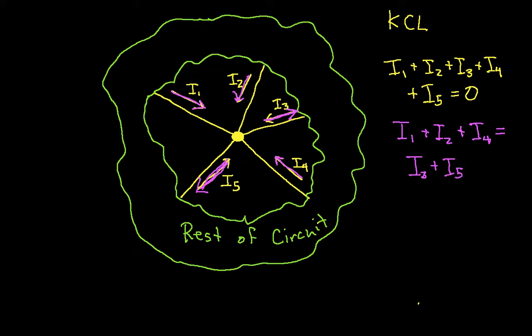In words, the sum of the currents entering the node is equal to the sum of the currents leaving the node. Either you can convince yourself that these are mathematically correct or mathematically identical.